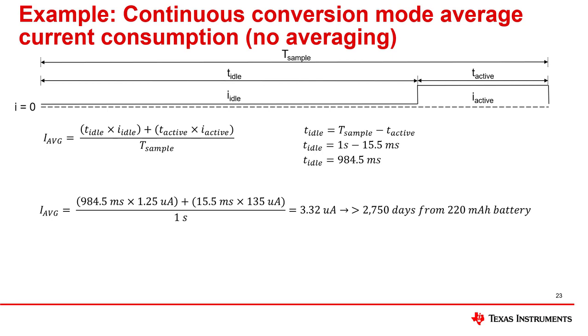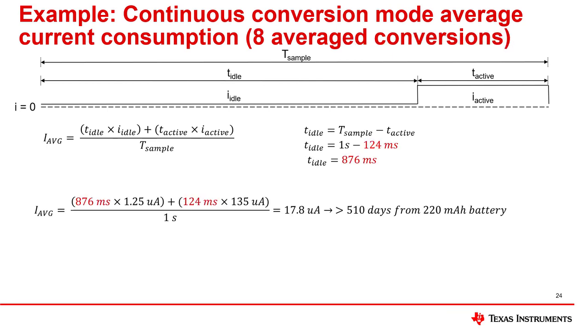Let's quickly take a look at how this result changes if we instead configure the device for a single temperature conversion every second in continuous conversion mode with eight average conversions. We can go back to the TMP117 datasheet and substitute the typical value for current consumption in continuous conversion mode and the values for t-active and t-idle with eight average conversions. In this case, t-active has increased and t-idle has decreased, shown here in red. When we simplify the equation, we see that the average current draw for the sensor operating at one hertz conversion rate in continuous conversion mode with eight average conversions is around 17.8 microamps, corresponding to more than 510 days from a 220 milliamp hour coin cell battery.